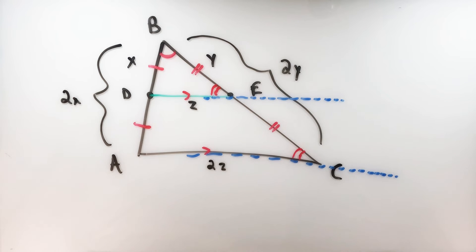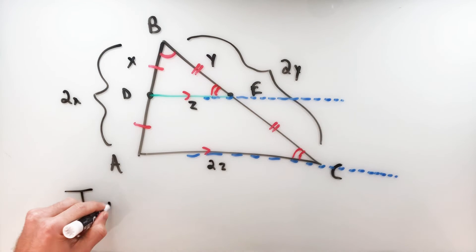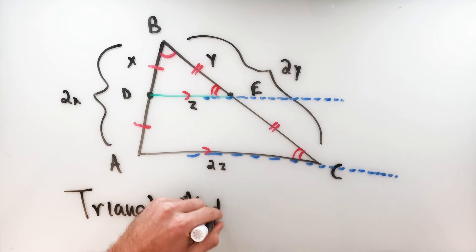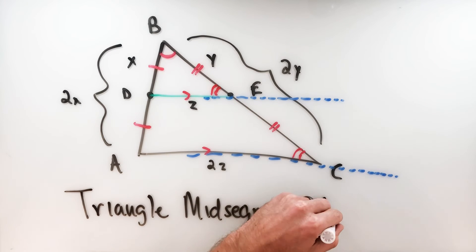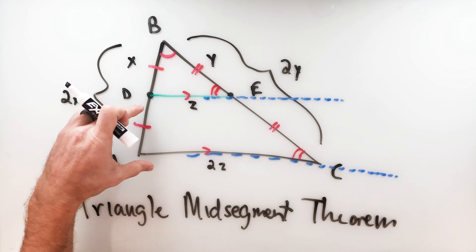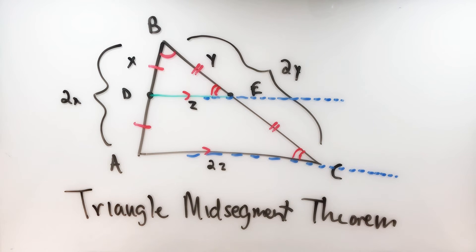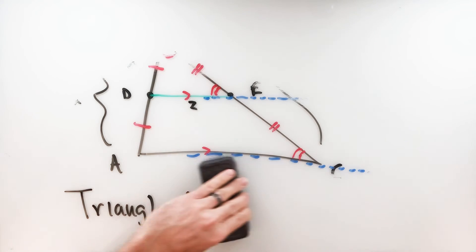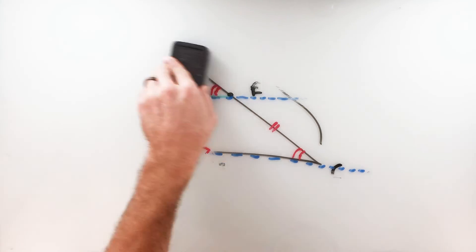So we have two properties that make up the Triangle Mid-Segment Theorem. The triangle mid-segment theorem states that the segment joining the midpoints of two sides of a triangle — the mid-segment — is parallel to the third side and is half of its length. This is true for all mid-segments of any triangle.